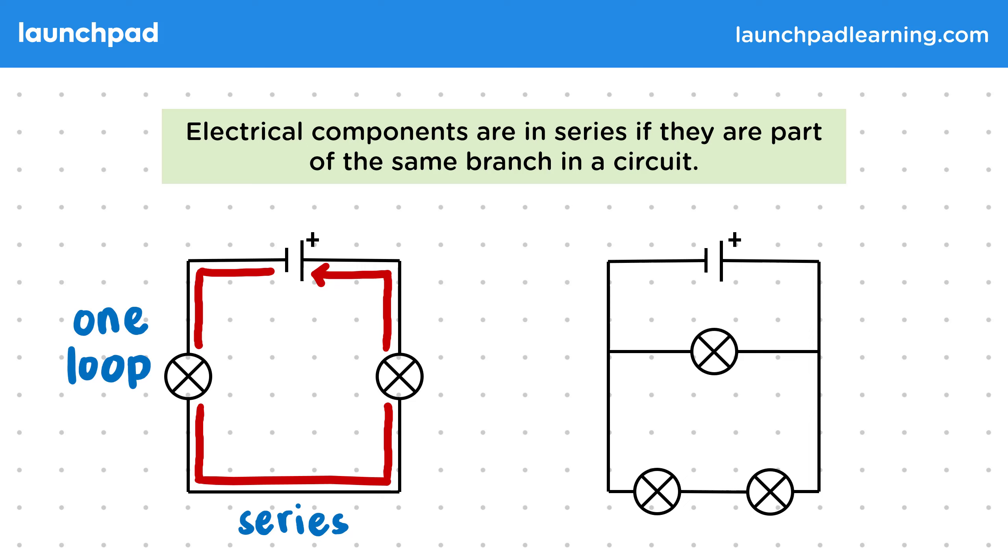Then on the right we have a branching path in the circuit. There are two lamps on the bottom branch and one lamp in the middle. This also means we can either travel around the circuit on the middle branch or the outer branch. In other words there are two loops.